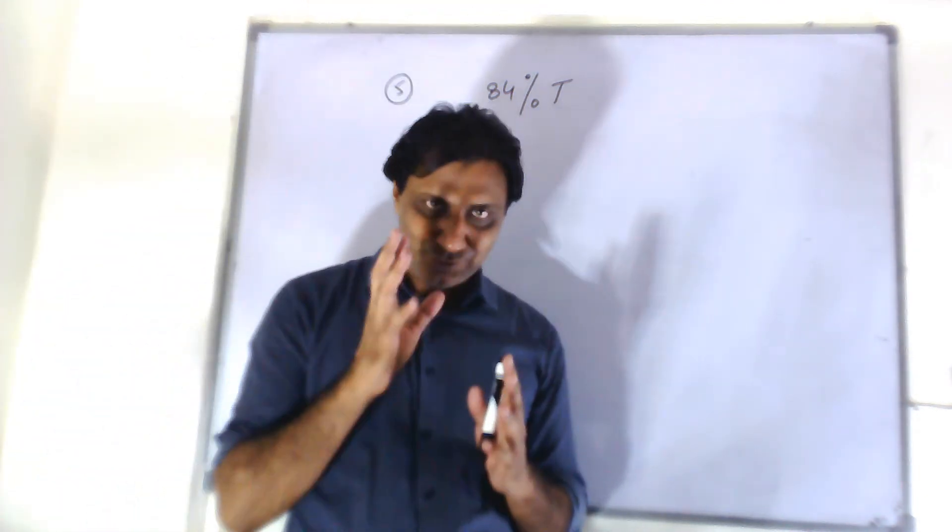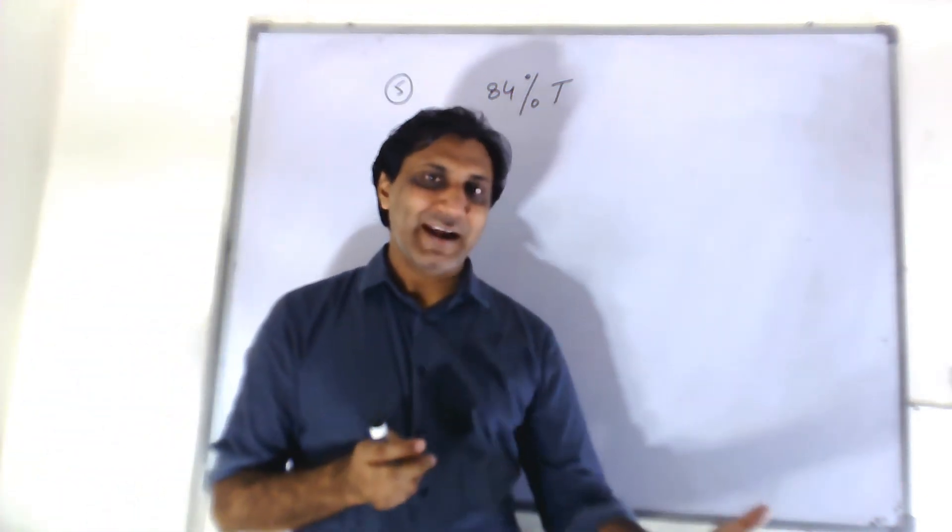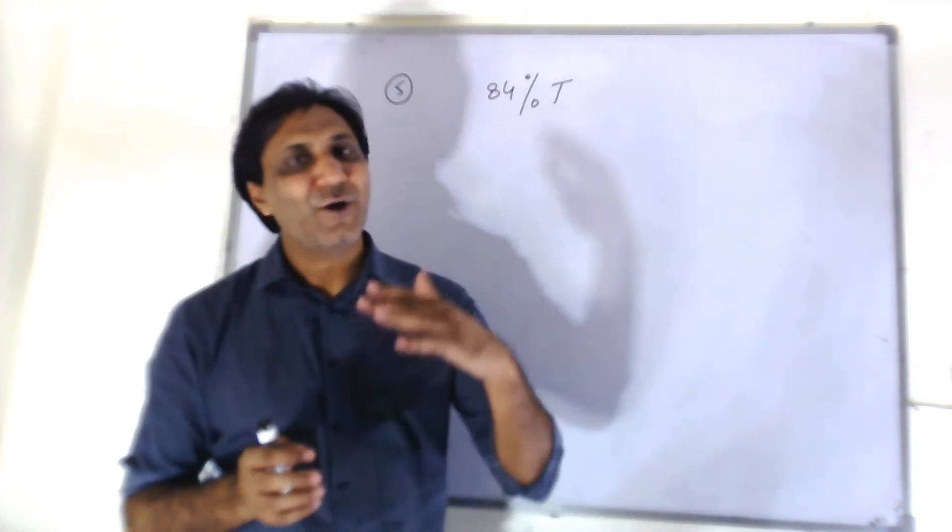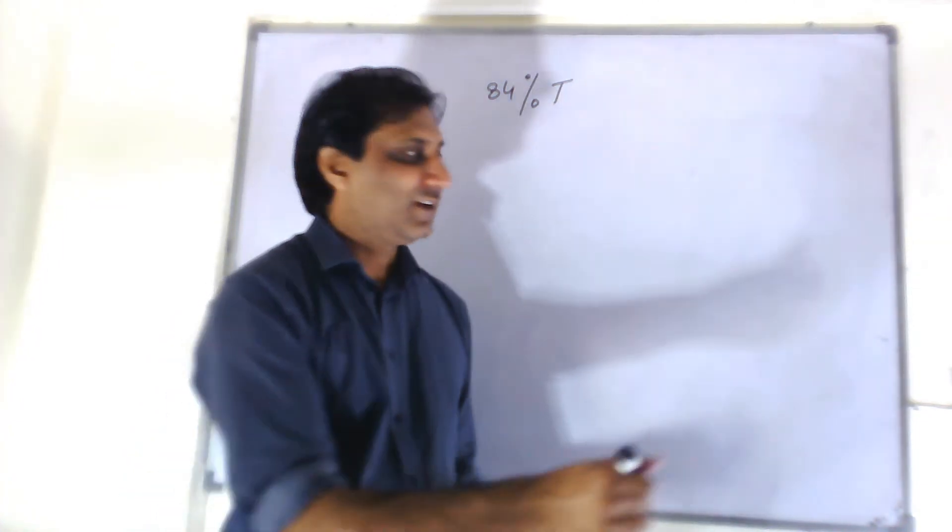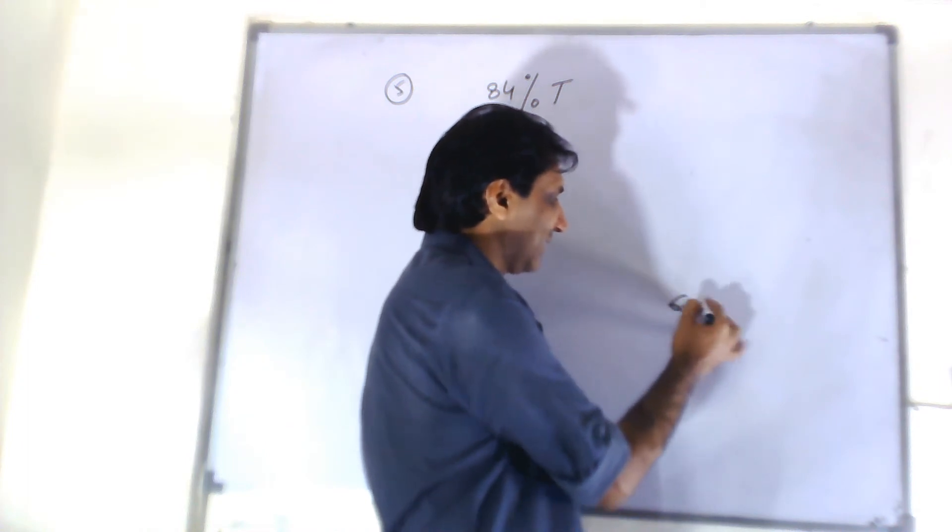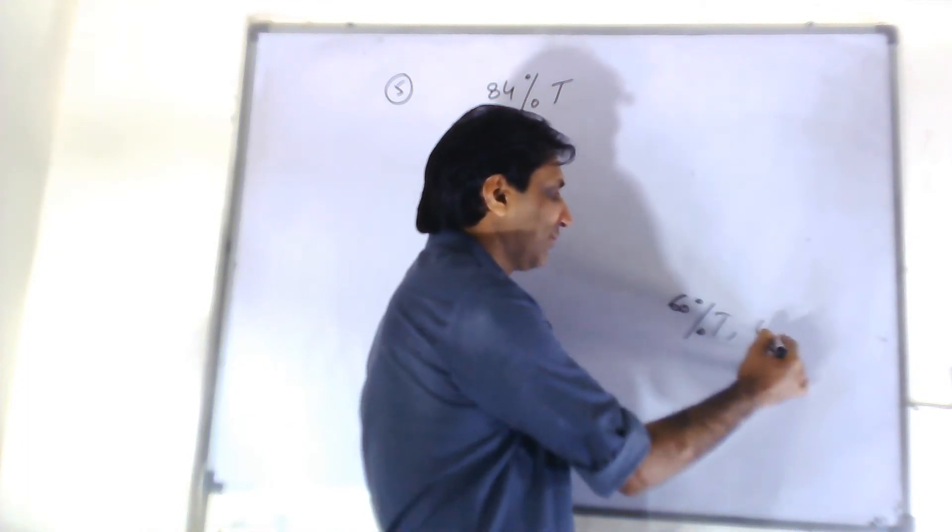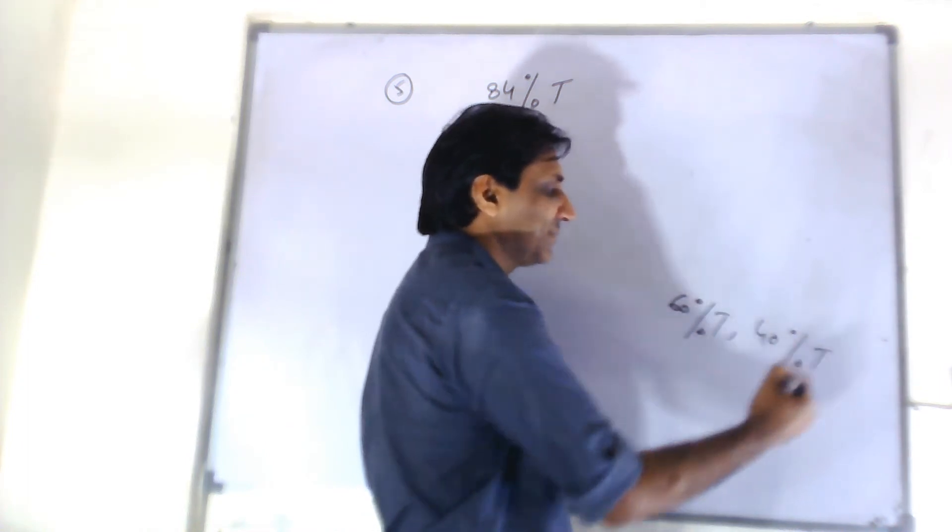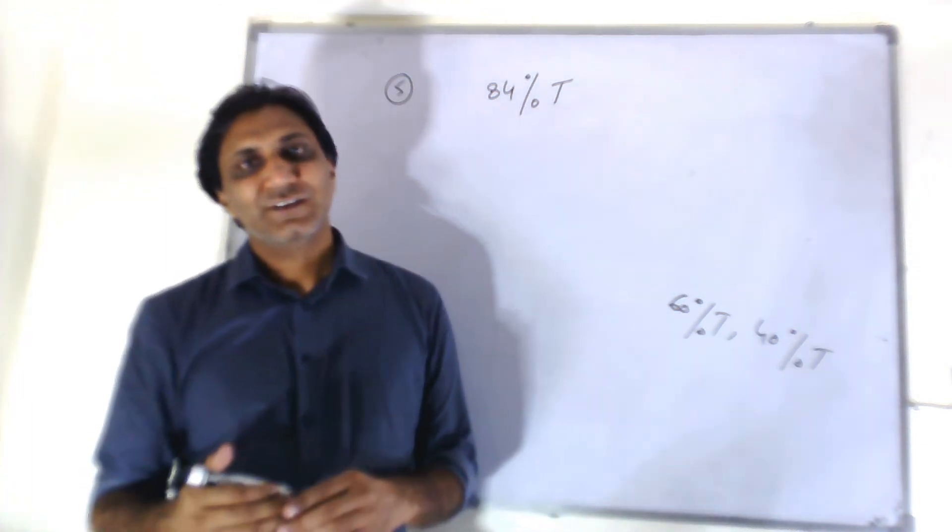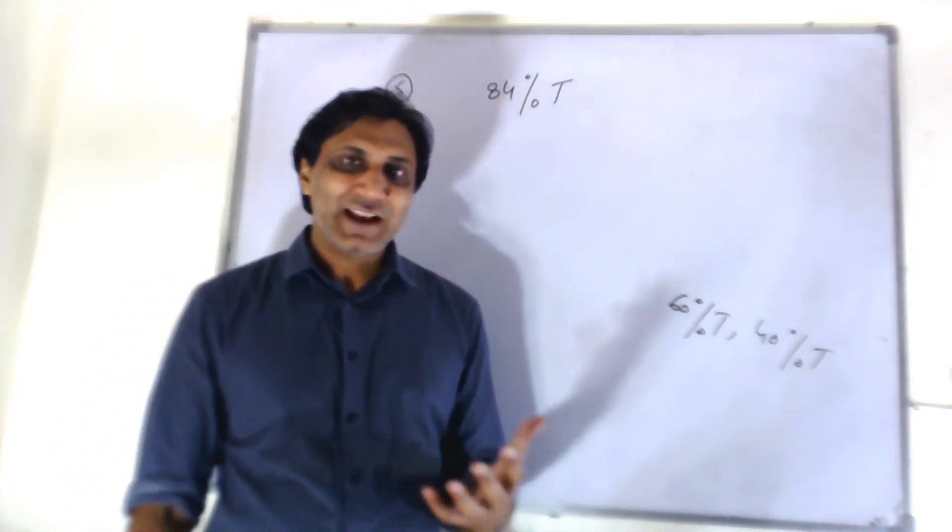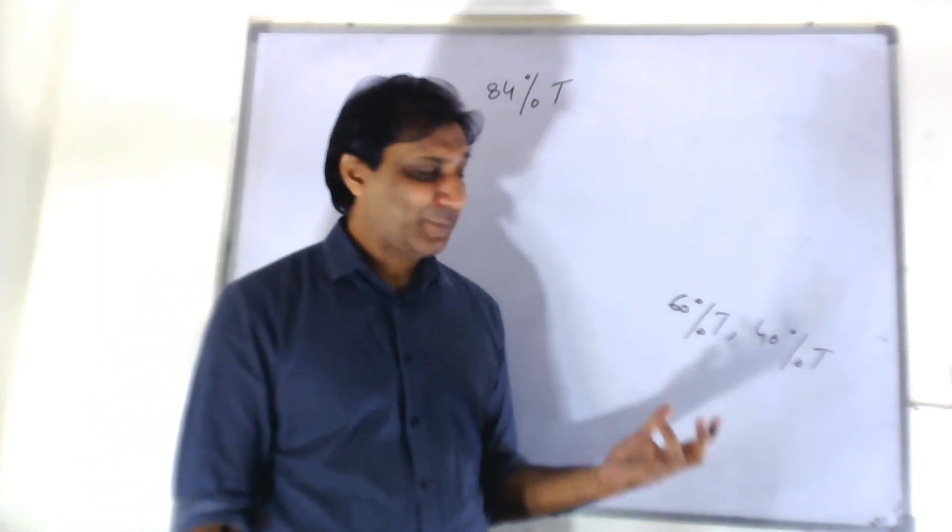If you are competing with your friend and you have got 60% of votes, how much has your friend got? You have got 60% of total, then your friend must have got 40% of the total votes. By what percent did you win the election? Usually people say I won it by 60%. No, you didn't.